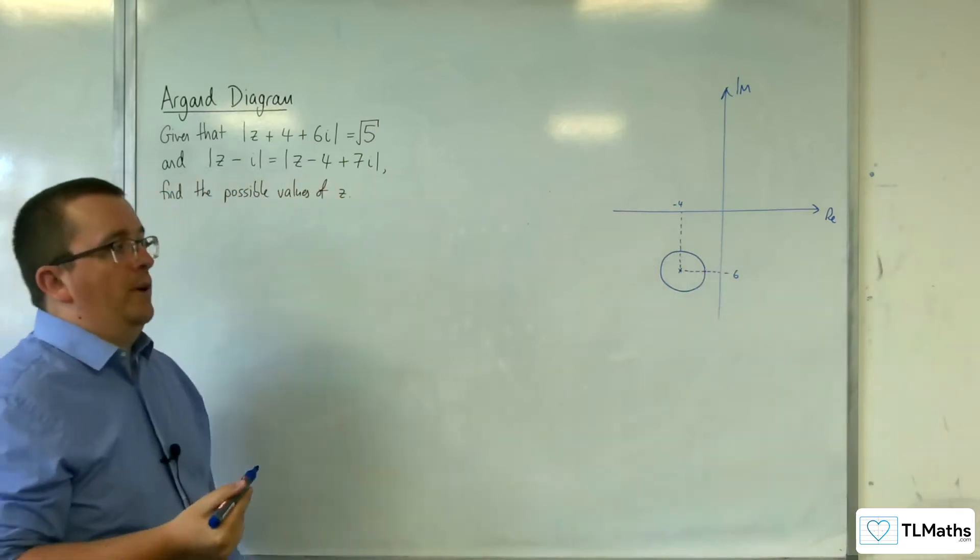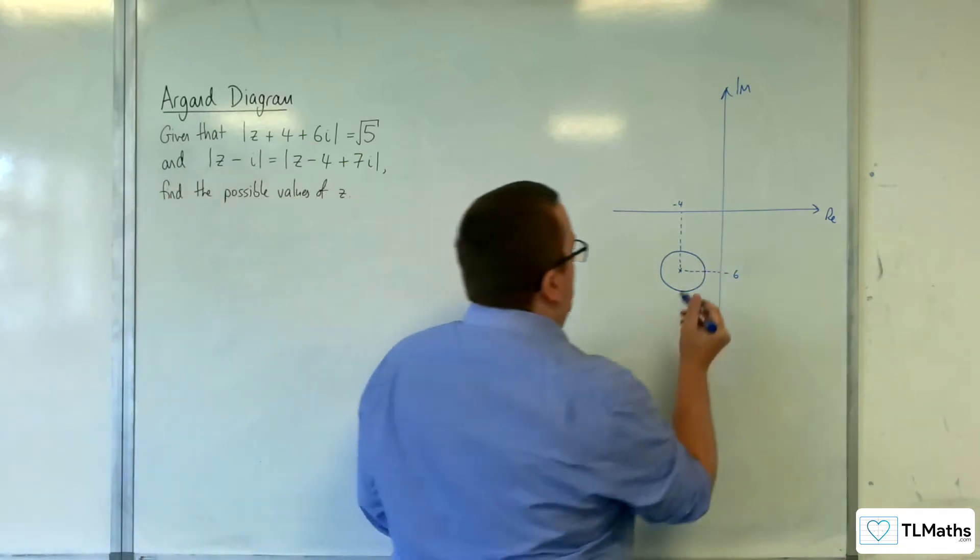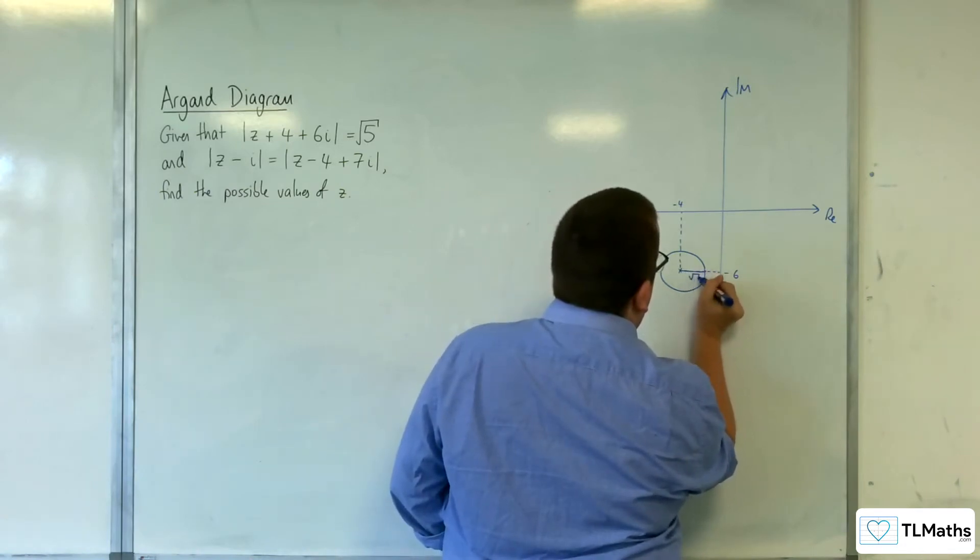That needs to be rough so I can visualise what's going on. So that is my circle. And that's of length of root 5.